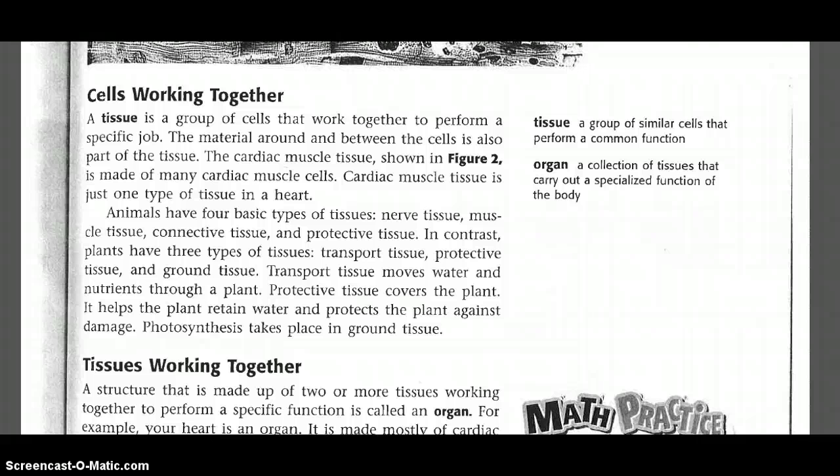Animals have four basic types of tissues: nerve tissues, muscle tissues, connective tissues, and protective tissues. In contrast, plants have three types of tissues: transport tissues, protective tissues, and ground tissues.